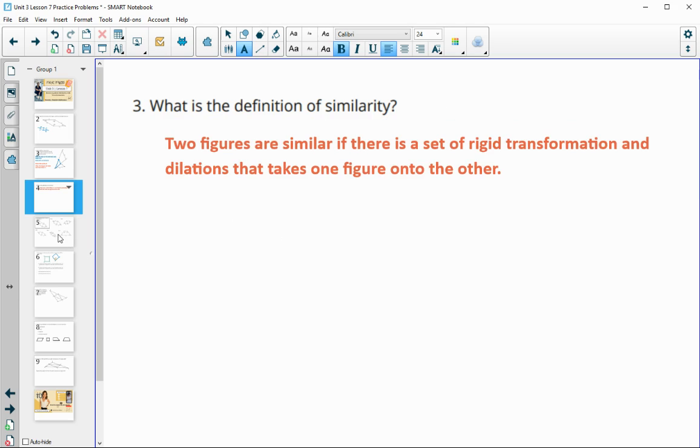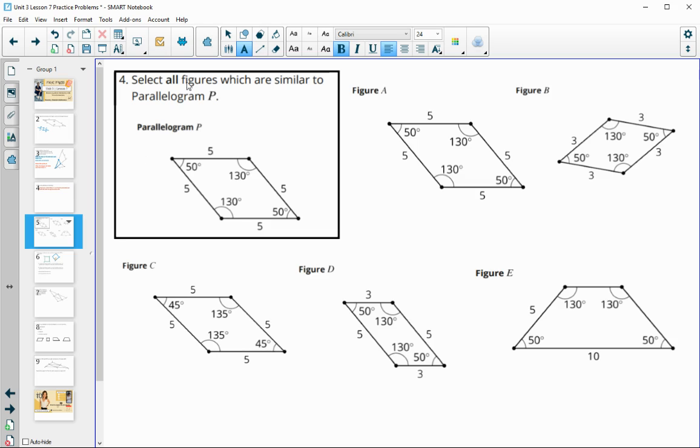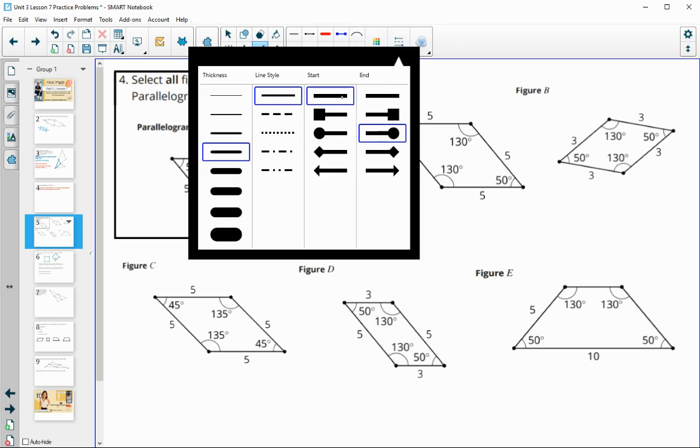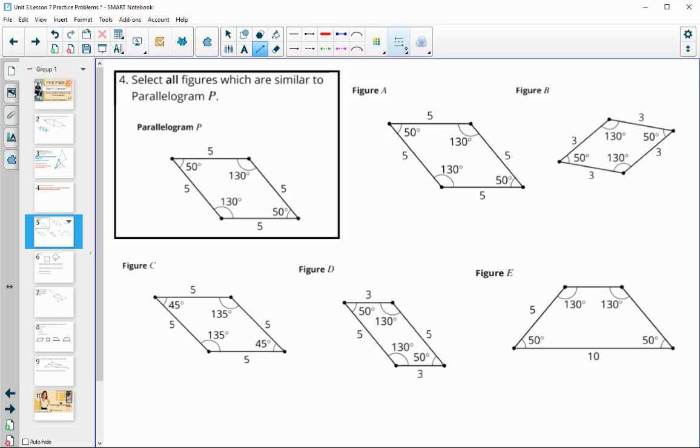Number four: select all figures that are similar to parallelogram P. So remember, one thing we want to look at is that the angles stay the same size. So if you find anywhere the angles have changed, then that would be not similar. So this figure C that has 45 and 135 in it, that's not similar. And then when we look, this parallelogram is actually a rhombus—all four sides are the same. So if any of the side lengths change, then we would have a non-similar shape. So in figure D we've got sides that are five and sides that are three, so then that one's going to be bad.